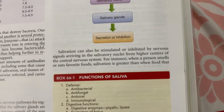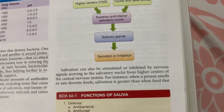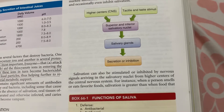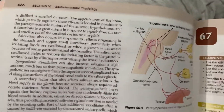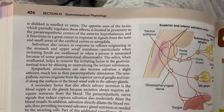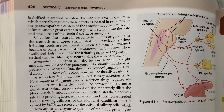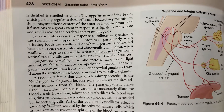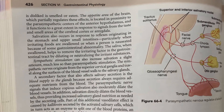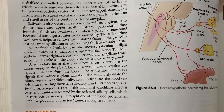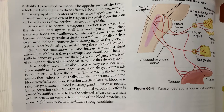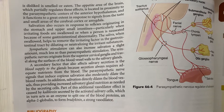Salivation can also be stimulated or inhibited by nervous signals arriving in the salivatory nuclei from higher centers of the nervous system. For example, when a person smells or eats favorite food, salivation is greater than when disliked food is eaten. The appetite area of the brain, located in the lateral nucleus of the hypothalamus, partially regulates these effects and is located in proximity to the parasympathetic centers of the anterior hypothalamus.